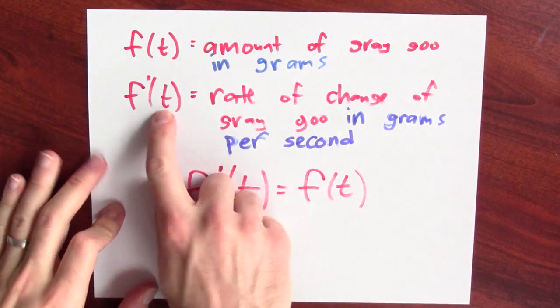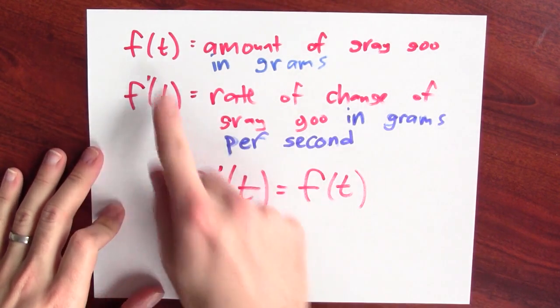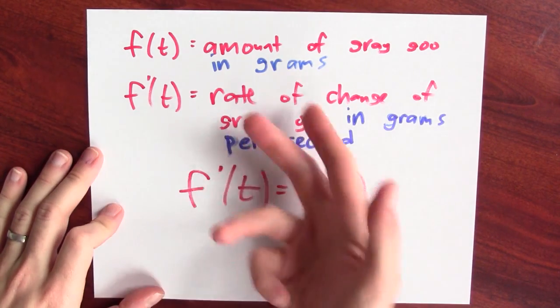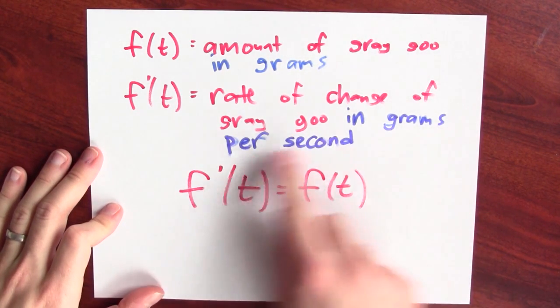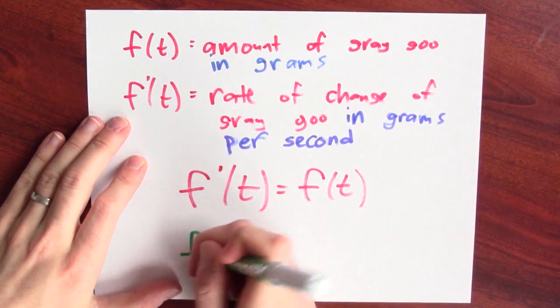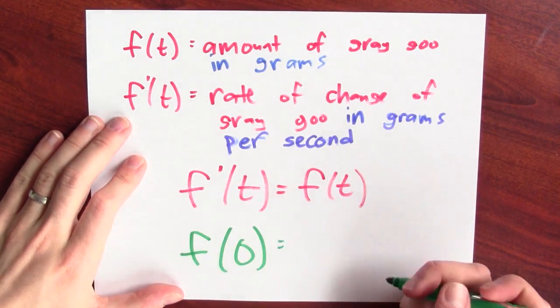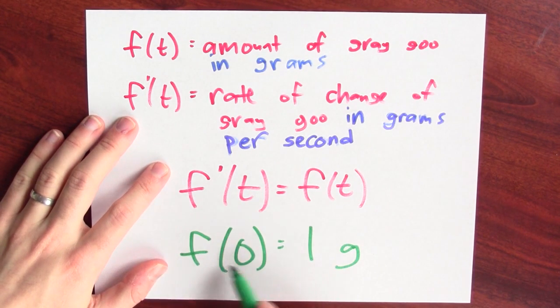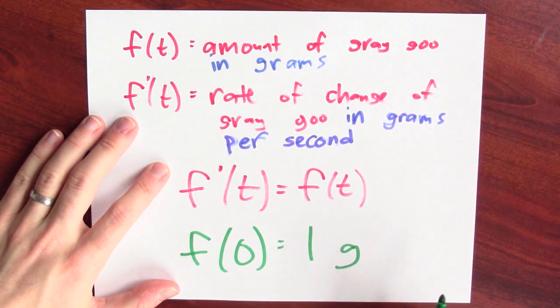What are the units of the derivative? Let's have time measured in seconds and the amount of gray goo measured in grams. That means the rate of change in the amount of gray goo will be measured in grams per second. Let's suppose that when the experiment begins at time zero, we have one gram of gray goo. In symbols, that says that f of zero is equal to one gram.